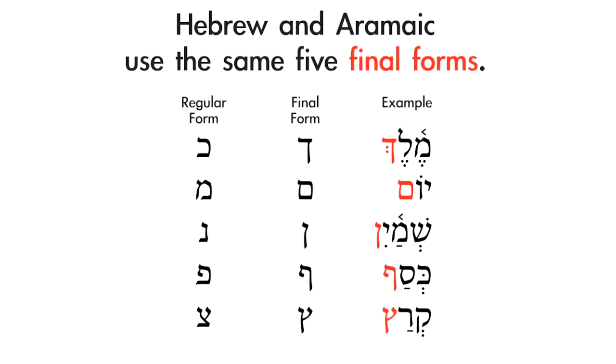In addition to sharing the same alphabet, Hebrew and Aramaic also share many of the same peculiarities embedded in that alphabet. Both have five consonants that have two different forms — a regular form and a final form. You will see and recognize five letters in the left-hand column here: the Kaf, the Mim, the Nun, the Pei, and the Tsare. In the middle column, you'll recognize five final forms — again, the Kaf, the Mim, the Nun, the Pei, and the Tsare.